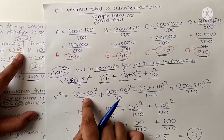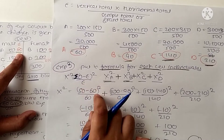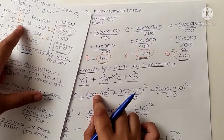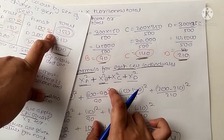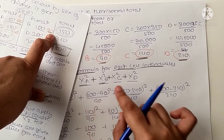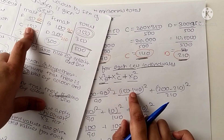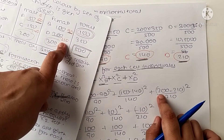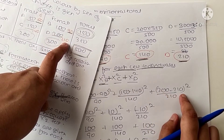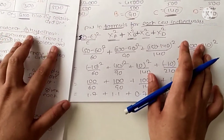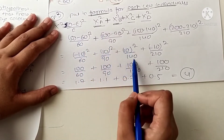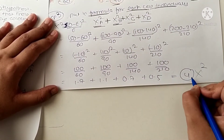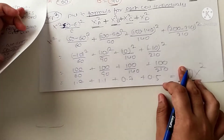For cell B: (100 minus 90) squared divided by 90. For cell C: (150 minus 140) squared divided by 140. For cell D: (200 minus 210) squared divided by 210. After calculating all four cells individually and summing them, we get the chi-square value of 4.